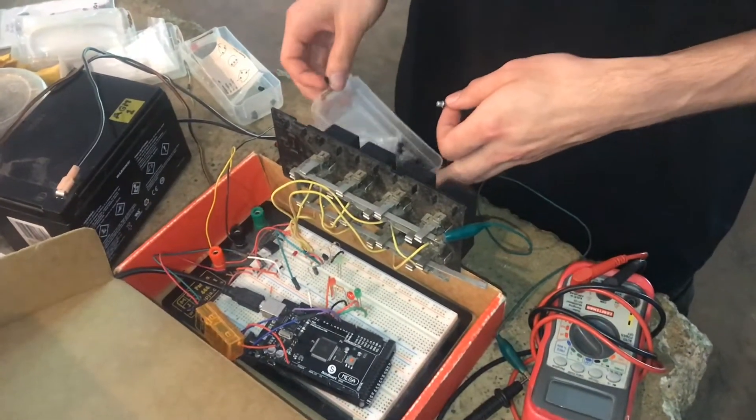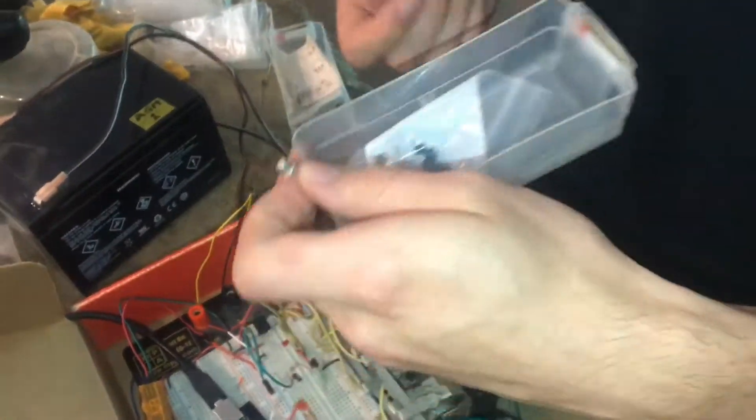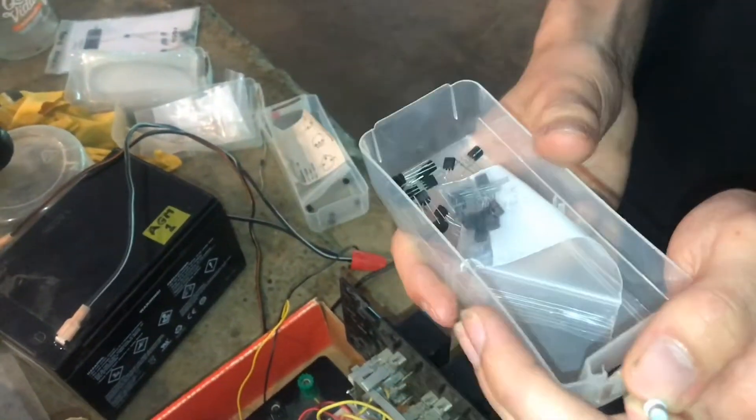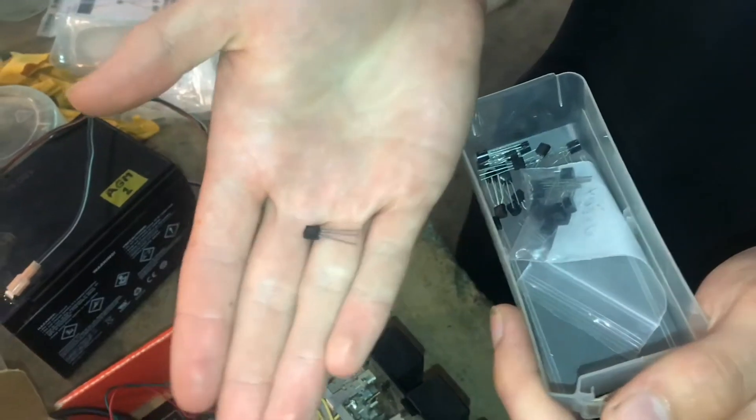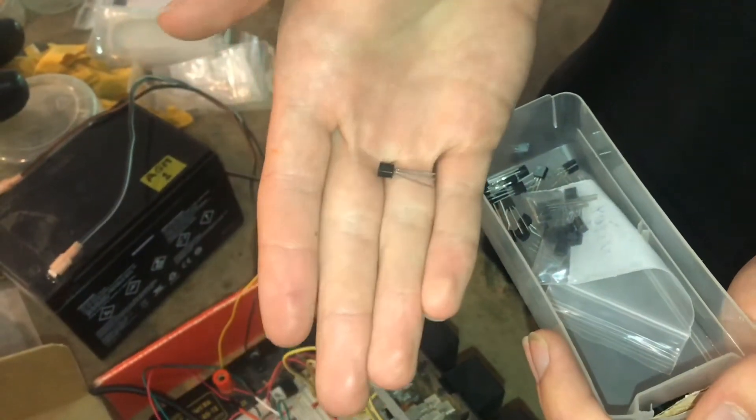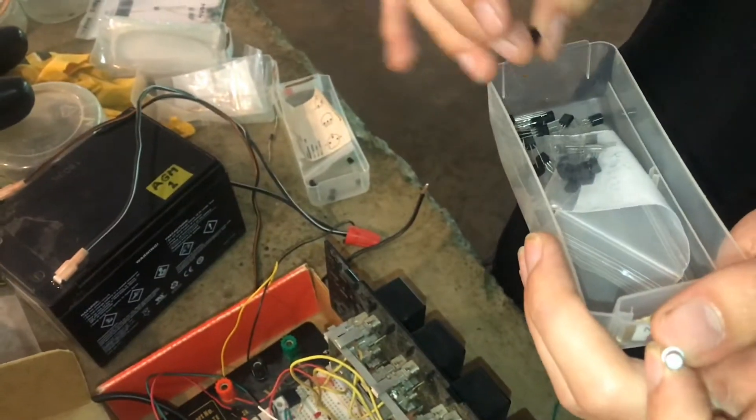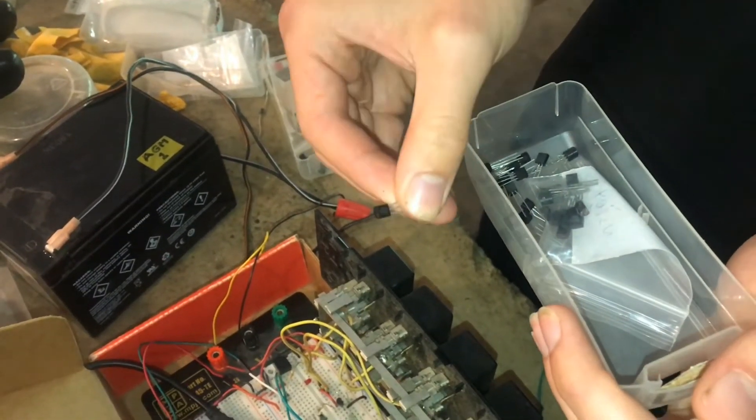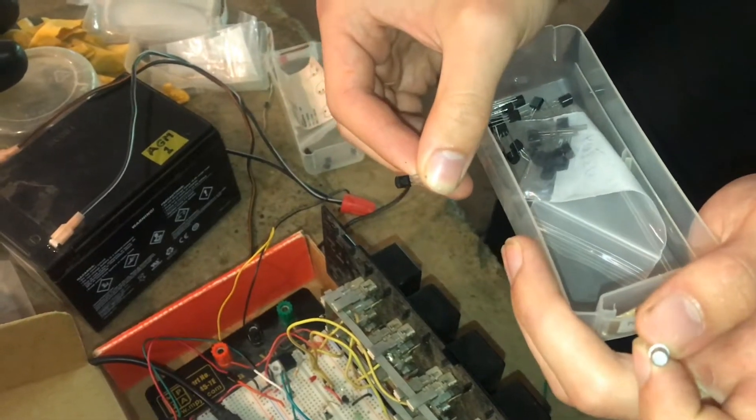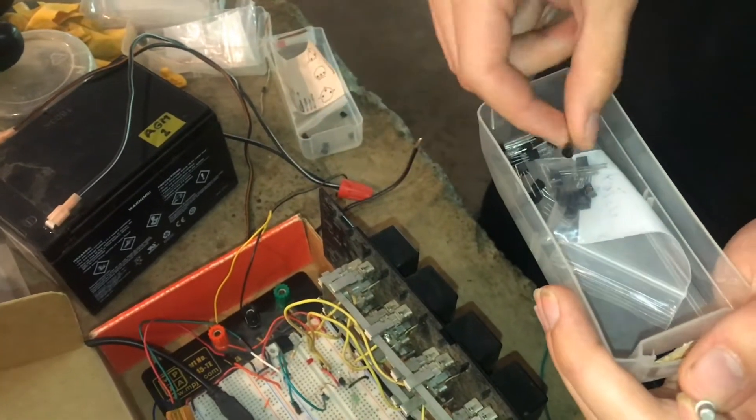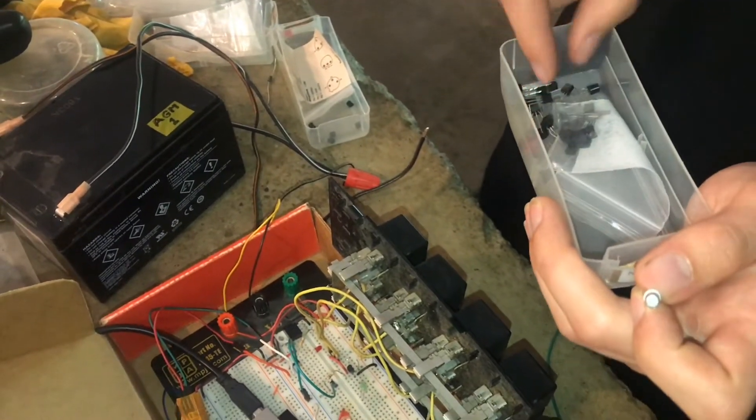My go-to transistor is the 3904. It is super cheap, super common, and it's in this TO-92 package. They're great for a lot of things, but the data sheet says it has a maximum current draw of 200 milliamps, which is really going to be a problem for us if we need it to be 250.